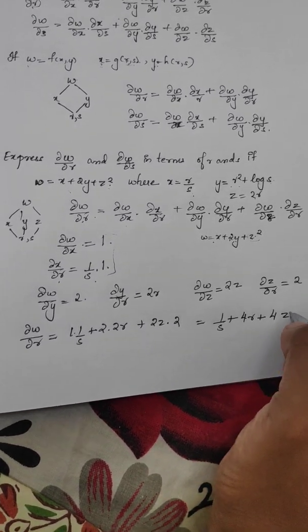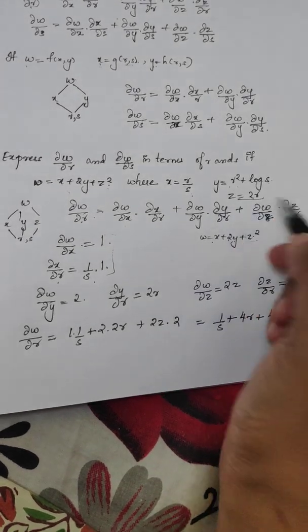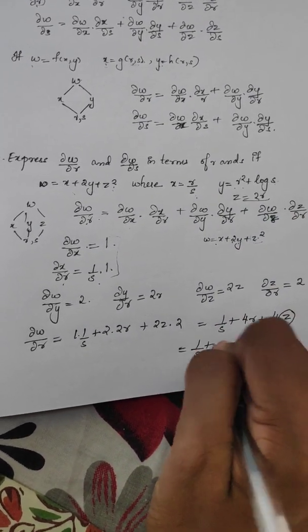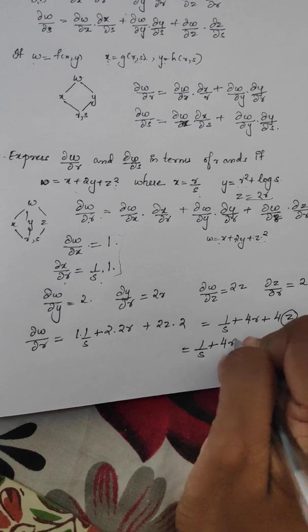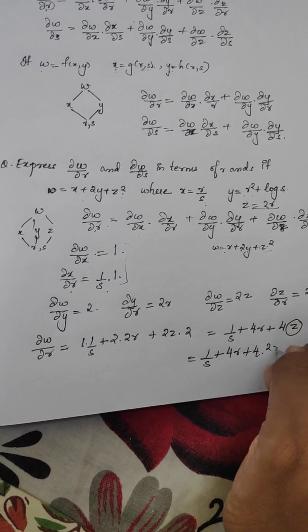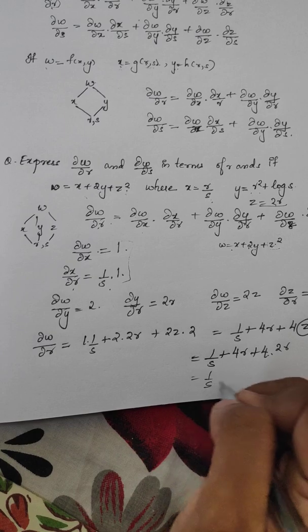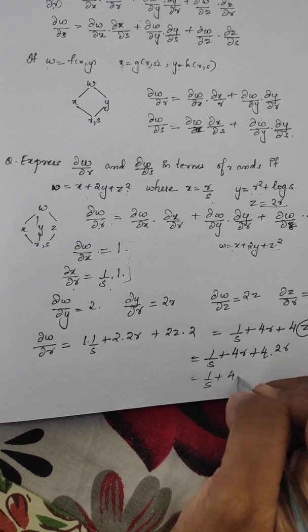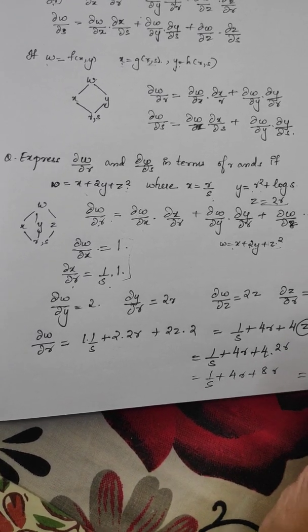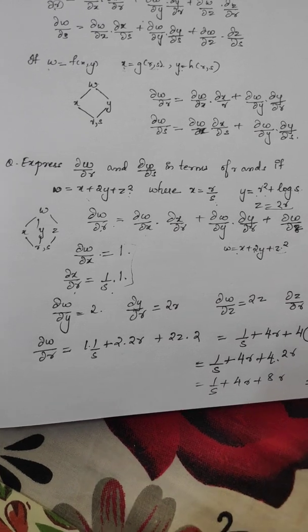Substituting the values, we get ∂w/∂r equals 1/s plus 4r plus 8r, that is, 1/s plus 12r.